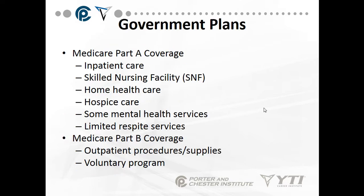Government plans include Medicare, which has four parts. Medicare Part A covers inpatient care, skilled nursing facilities, home health care, hospice care for end-of-life, some mental health services, and limited respite services. Respite service allows a family member caring for a loved one 24/7 to have them sent to a nursing home for three or four days to get some time off.